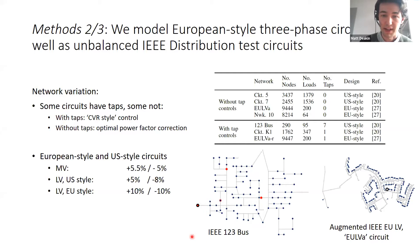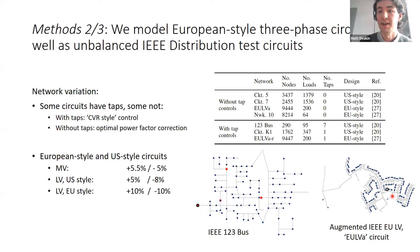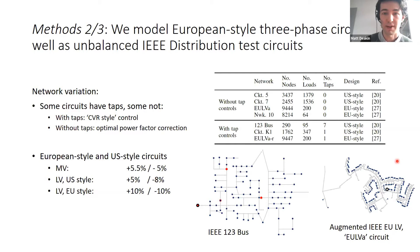The second thing we look at is a comparison of US and European style circuits. The highlighted one-two-three bus circuit has a bunch of voltage regulators shown as red dots. We also look at an augmented IEEE circuit where we stitch together the European low voltage test feeders along with all the other feeders from that circuit, since they're all fed through a common transformer. We do two versions: one without a regulator, which reflects the real world, and one where a regulator is added, which lets us compare with and without tap controls quite well.